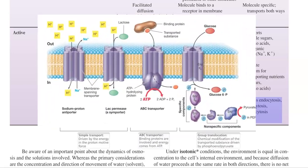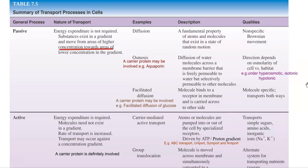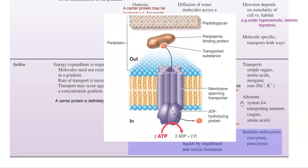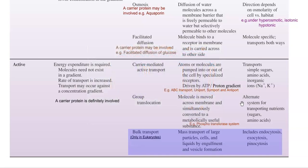Now we look at active transport. Energy is definitely required, in the form of ATP or a proton gradient, or energy-rich substances such as glucose-6-phosphate. Molecules do not need to exist in a gradient for transport to be accomplished. The rate of transport is usually increased compared to passive processes, and transport may occur against the concentration gradient. Carrier proteins are involved in all forms of active transport. In bacterial systems, two types of active transport dominate: carrier-mediated active transport, with classical examples being the ABC transport system and uniport, symport, and antiport-based transport.